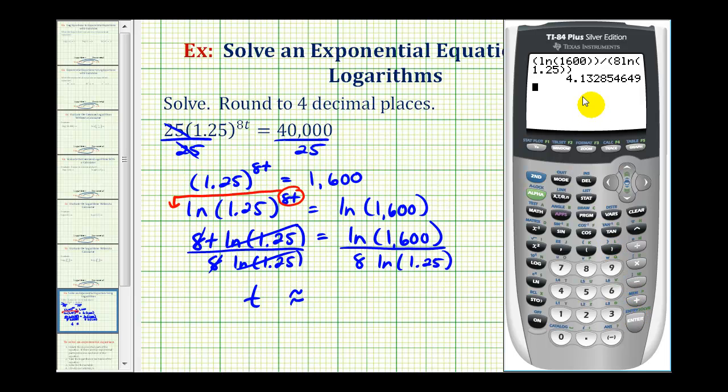Rounding to four decimal places, we can see t is going to be approximately 4.1329.